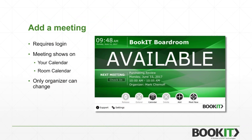There are a couple of ways to add a meeting. You can use your mobile device, laptop, or desktop, or you can book directly from the sign. If you select the add button at the sign, that requires a login. The benefit is that the meeting will show on your calendar — it creates a meeting on your calendar and invites the room, just like you would from your desktop. Only the organizer can change that meeting; no one can affect it at the sign unless they have your credentials.